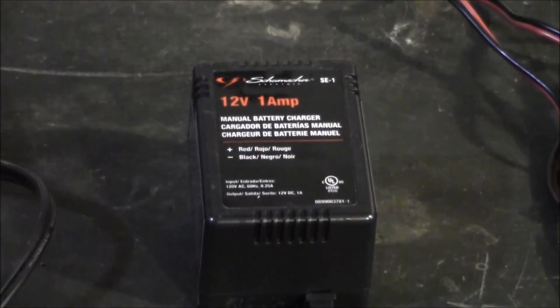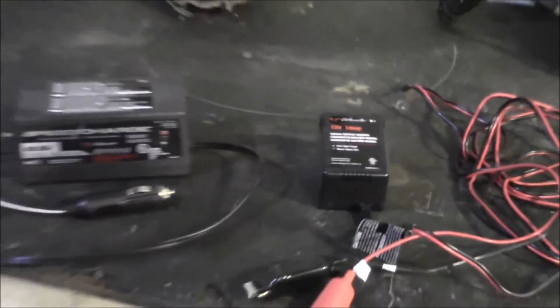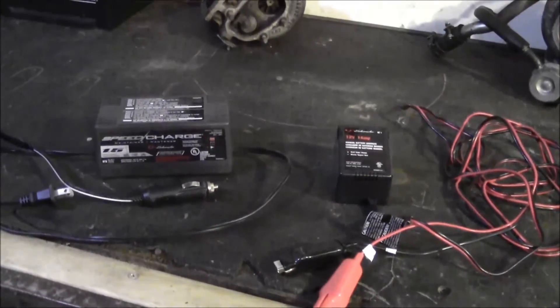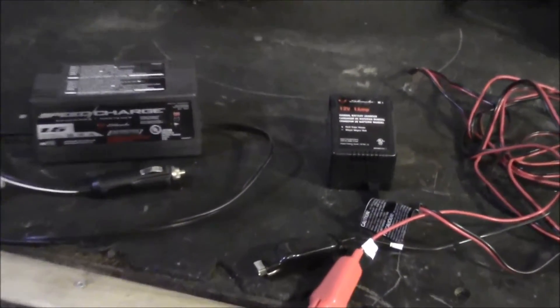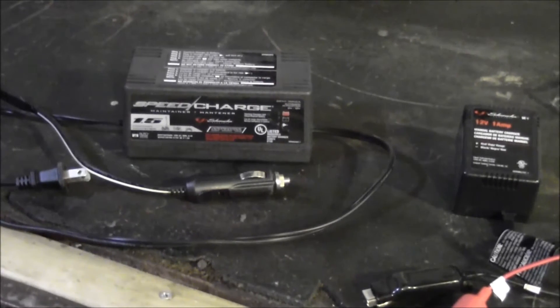This is a 12 volt, 1 amp manual battery charger that Schumacher makes, the SE1. So basically the big difference to me would be a trickle charger is manual, whereas a battery maintainer is automatic and offers a float mode.